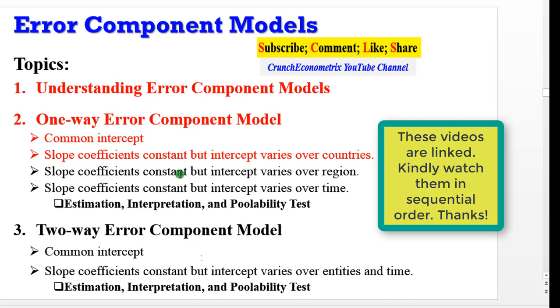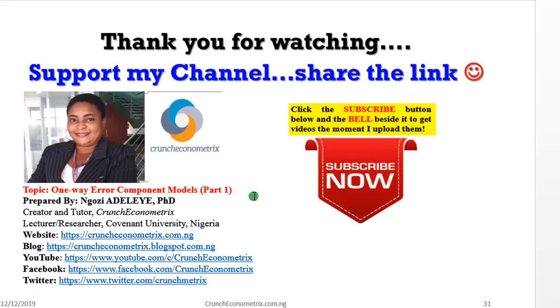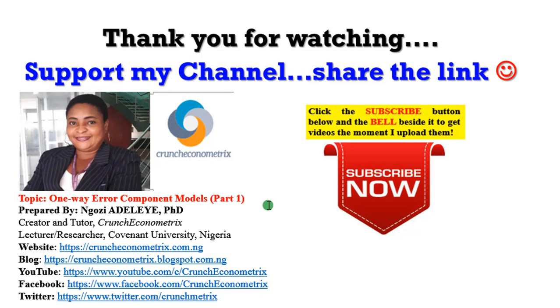I have concluded one-way error components model where the slope coefficients are constant but the intercept varies over countries. The next video will cover slope coefficients that are constant but intercept varies over region. Thank you so much for staying with me. Thank you for your subscription, your comments, and the questions you are sending. I appreciate you all. Crunch Econometrics here is dedicated to teach beginners and intermediate level users. Please don't go away, I'll be right back.